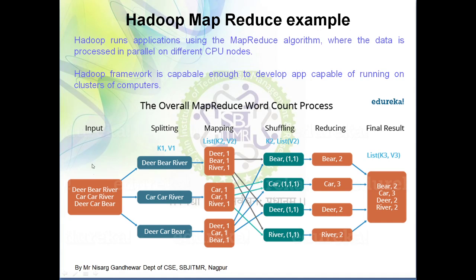We are going to provide a text file as input, because our main aim is to count the number of words present in that file. First, a split operation divides the input into 3 subparts. These are then given as input to the mapper, which divides the data into key-value pairs, assigning a value of 1 to every word. After that, a shuffling and sorting operation takes place, the result is given to the reducer, which aggregates it and produces the final output.